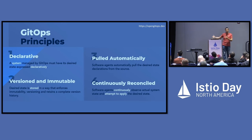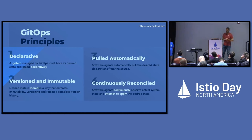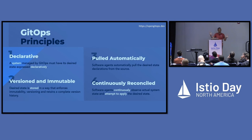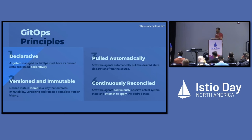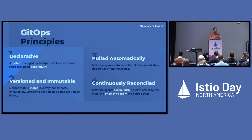The next principle is it needs to be versioned and immutable — meaning the desired state is stored in a way that enforces immutability, versioning, and retains a complete history. This is where the 'Git' in GitOps comes from, because that's kind of what Git gives you. Other things are fine to use as well, like S3, as long as it's versioned and immutable.